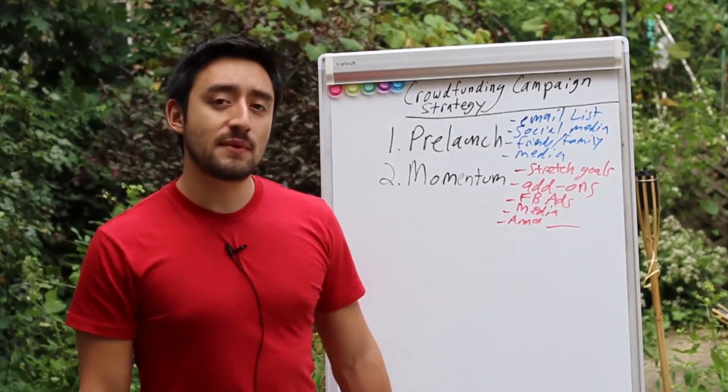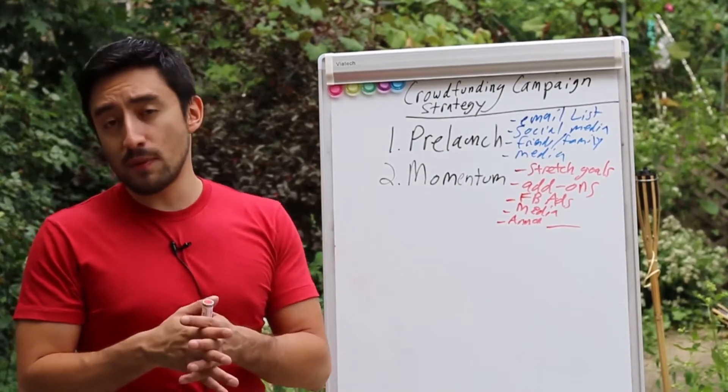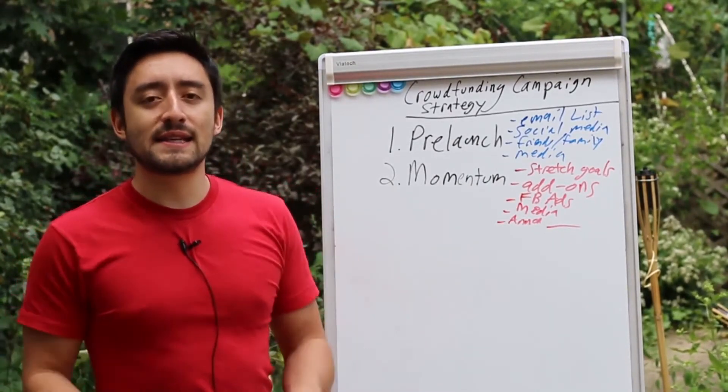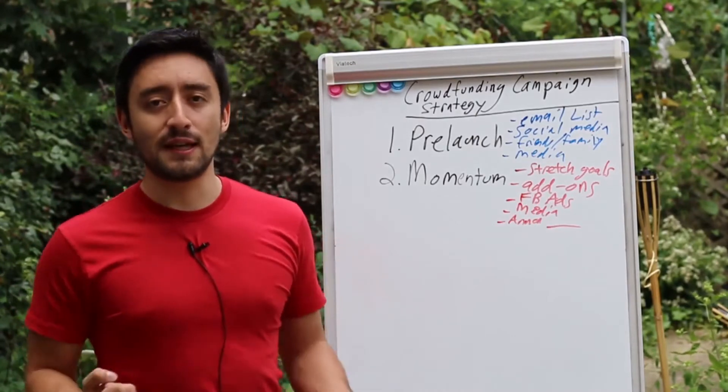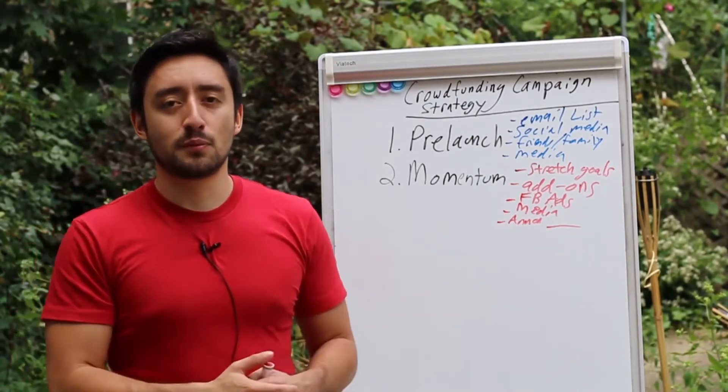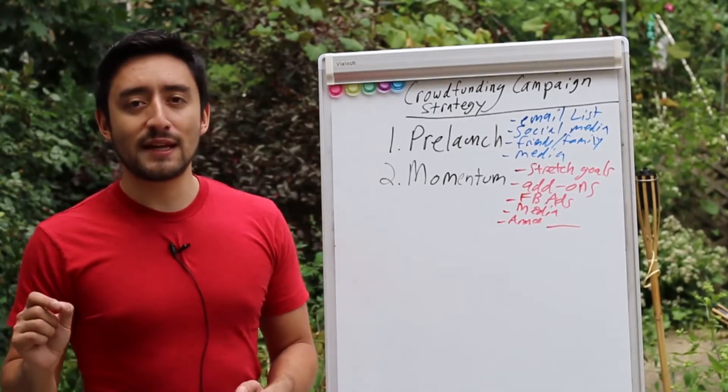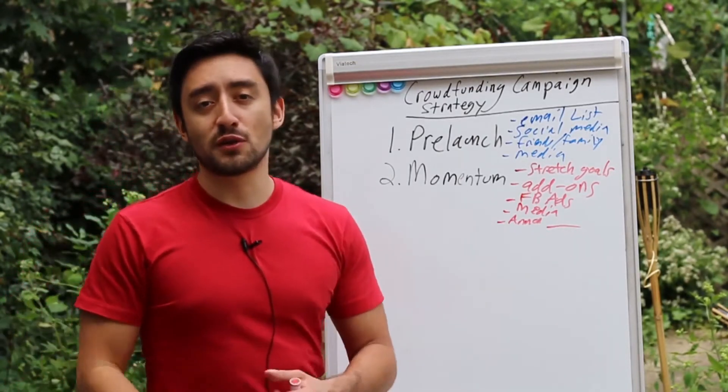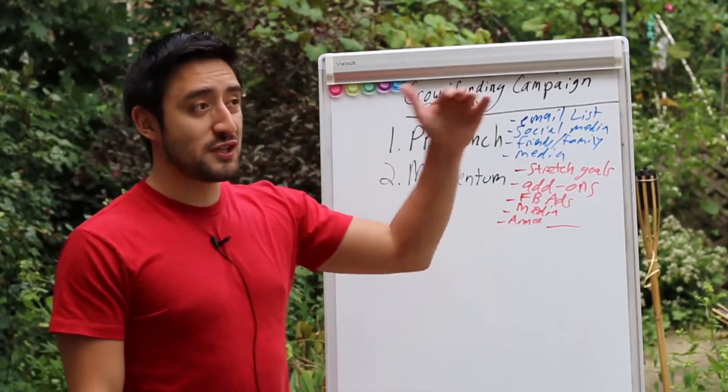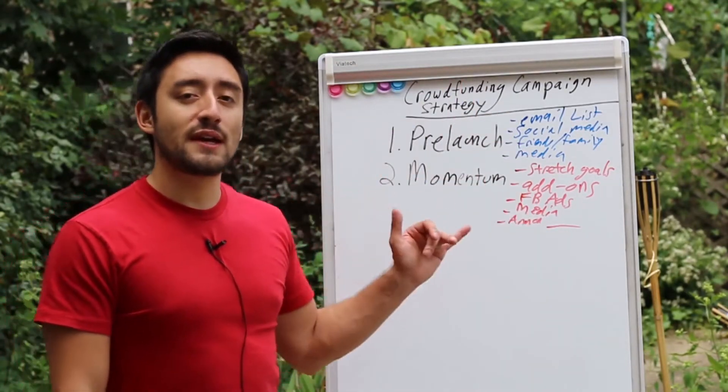So announcements are another way to maintain momentum. But I think another good thing when it comes to just momentum is that you have to maintain this sense that this is a limited opportunity, that the funding goal is limited, that you only have 30 days to get your pledge in. And these are some crucial ways you can actually encourage this. So like early bird reward tiers, reminding people that there are only a certain number of them left. That's a great way to maintain momentum.